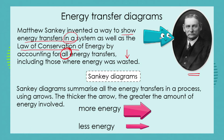What Matthew Sankey devised was a way to say: we've got a system, we're putting in this amount of energy, we're getting out useful energy, but we can also measure the wasted energy that we are putting out. Therefore, we can maybe improve the design of our appliance if we can minimize that wasted energy. The diagrams he invented are called Sankey diagrams — written with a capital S, named after Matthew Sankey.